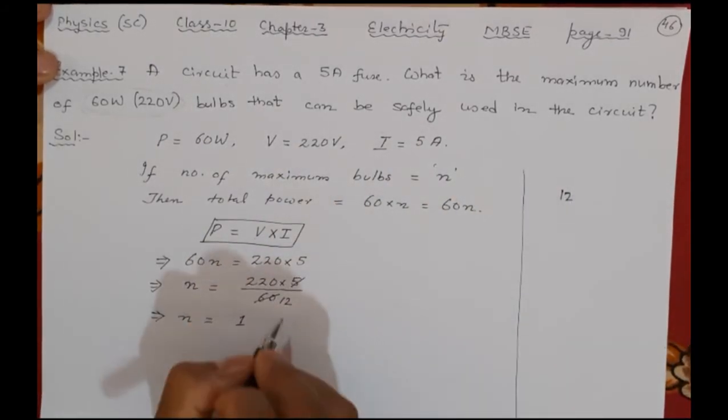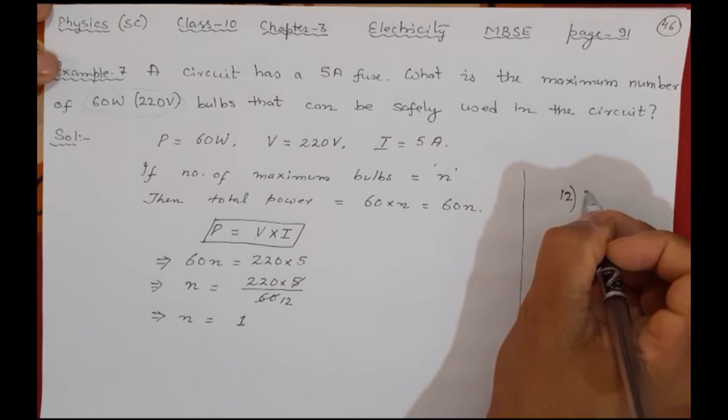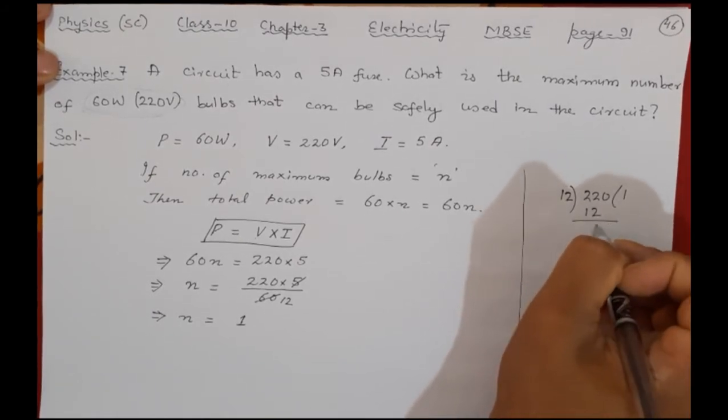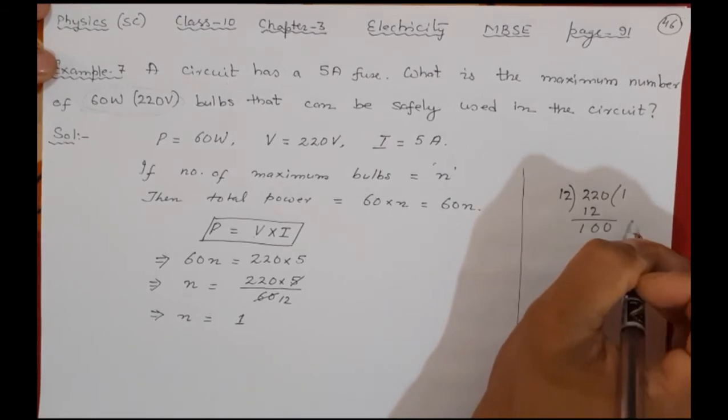Let me show you how to do. 5 12s are 60, you know this. Now 12 will divide 220. 12 ones are 12. 0, 1, 0, 100.